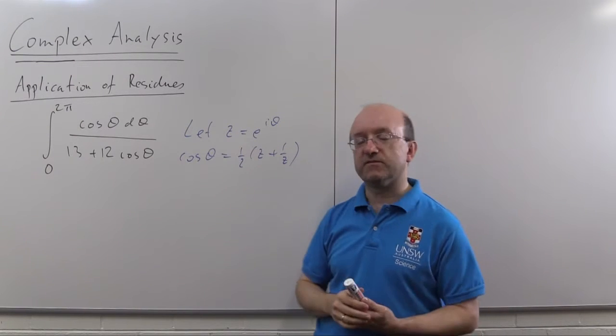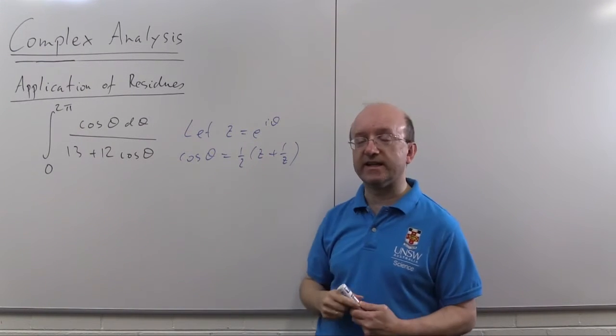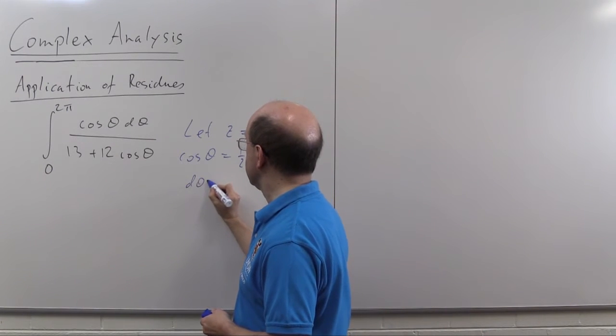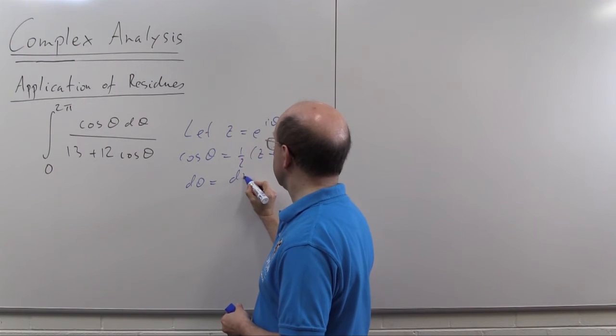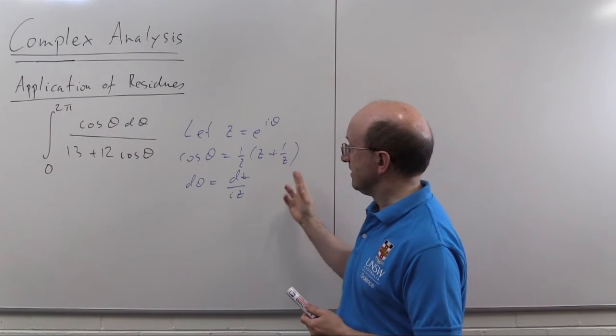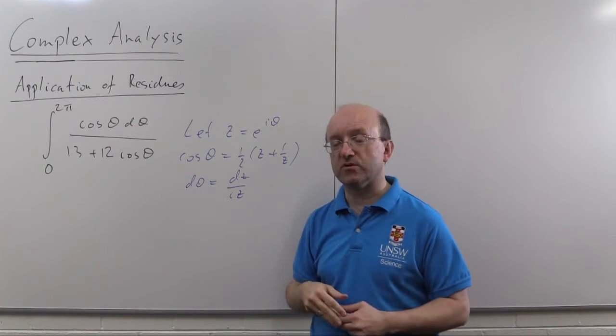Well, differentiating this thing, we see d z d theta is i e to the i theta, so the d theta will in fact be d z over i z. And then we just have to put all of this in.